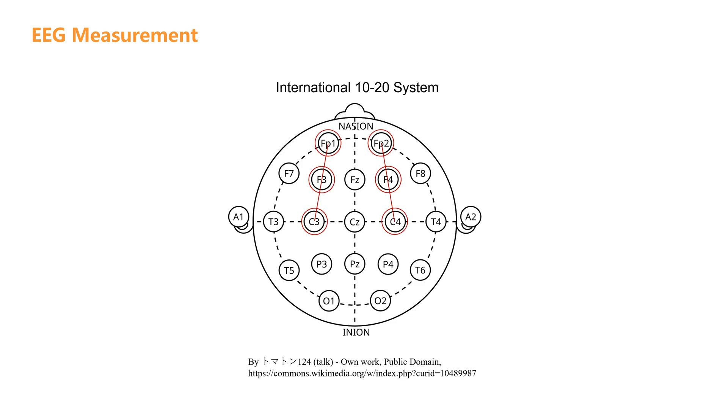The remaining points, F3 and F4, are located midway between FP1 and FP2, and C3 and C4, respectively.